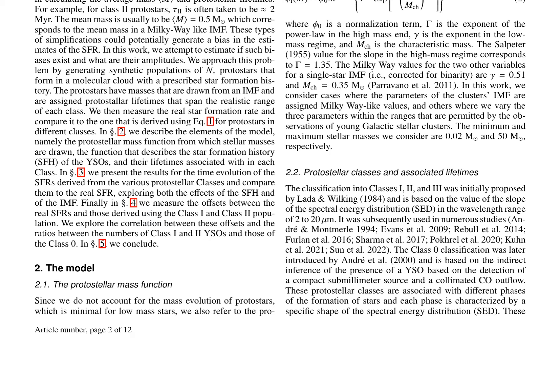The TPL is given by equation 2, with parameters that can be varied within the ranges permitted by observations of young galactic stellar clusters. Protostars are classified into classes I, II, and III based on the slope of the spectral energy distribution (SED) in the 2 to 20 micrometers wavelength range. Each class is associated with different phases of star formation and is characterized by a specific SED shape. Class II protostars are typically associated with lifetimes of around 2 Myr. By comparing the real SFR to the estimated SFR, this work aims to quantify biases in SFR estimates.